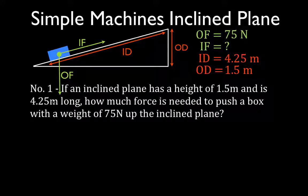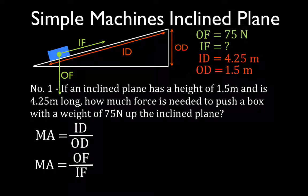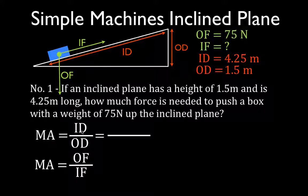There are two equations we can use for the mechanical advantage, because we first have to calculate the mechanical advantage. One is that the mechanical advantage equals the input distance divided by the output distance. The other is that mechanical advantage equals output force divided by input force. In this problem we know both distances, so we're going to use the first equation — dividing the input distance of 4.25 meters by the output distance of 1.5 meters.